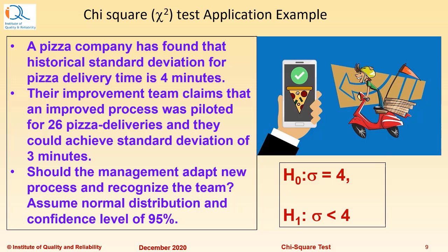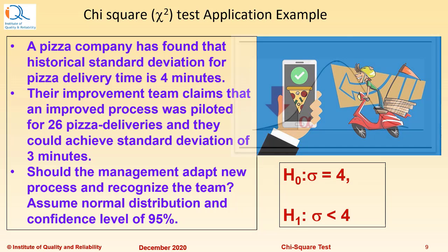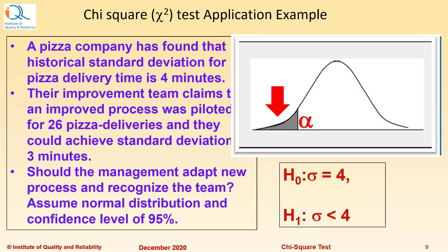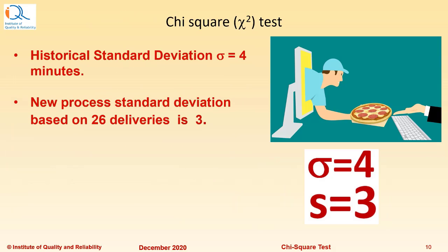Here, H₀: σ = 4 would be the null hypothesis and σ < 4 would be the alternate hypothesis as we want to test for reduction of standard deviation. Historical standard deviation σ equals 4 minutes. New process standard deviation based on 26 deliveries is 3.